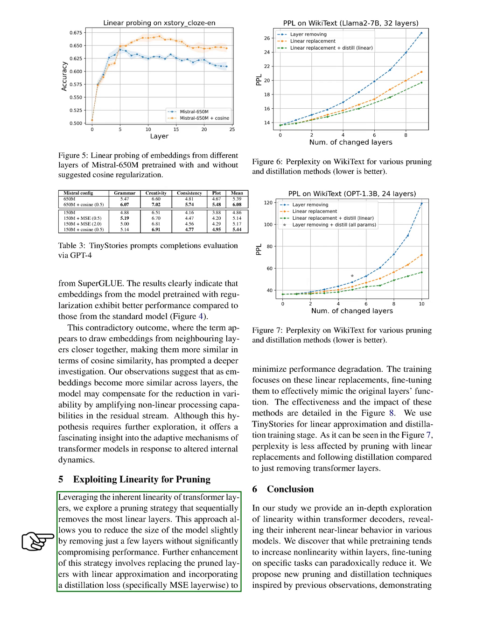In this section, we investigate a pruning technique that takes advantage of the linearity present in transformer layers. By removing the most linear layers one by one, we can slightly reduce the model size without significantly hurting its performance. To improve this method, we replace the pruned layers with linear approximations and introduce a distillation loss, specifically mean squared error loss, to minimize the drop in performance.